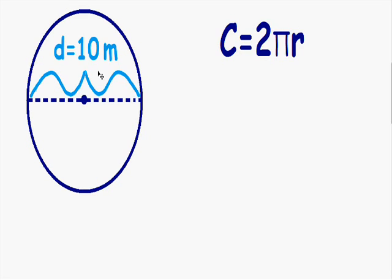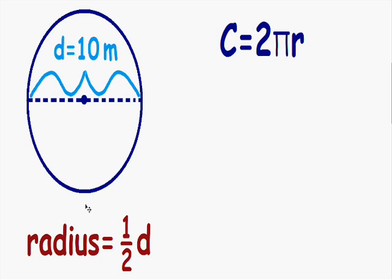The good news is if you're given the diameter, it's really easy to find the radius. The radius is always one-half of the diameter: radius = ½d. So if we know the diameter is 10, then the radius is one-half of 10, which is 5 meters.